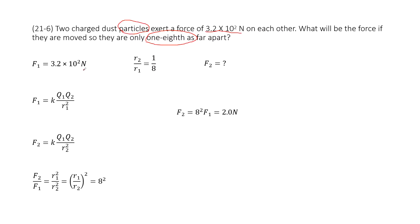So we write what is given. First, F1 is given, the force magnitude. And we're told that r2 over r1 is 1 over 8, because one-eighth. We need to find F2.